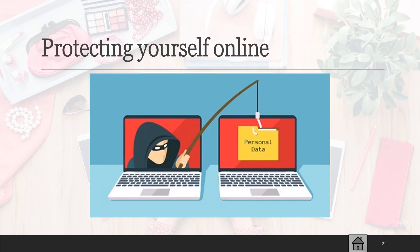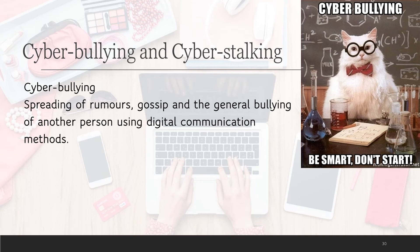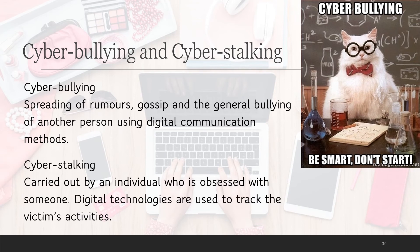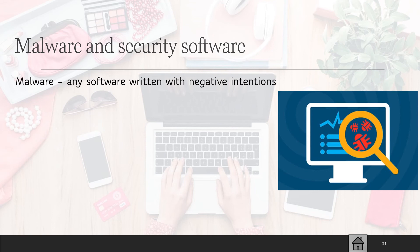There are important ways to protect yourself online. Cyberbullying is when somebody spreads rumors or gossip, or generally bullies another person using digital communication methods. Cyberstalking is when an individual is obsessed with somebody and uses digital technologies to track the victim. Malware is any software written with negative intentions — someone trying to harm you by affecting your computer so it doesn't work properly.